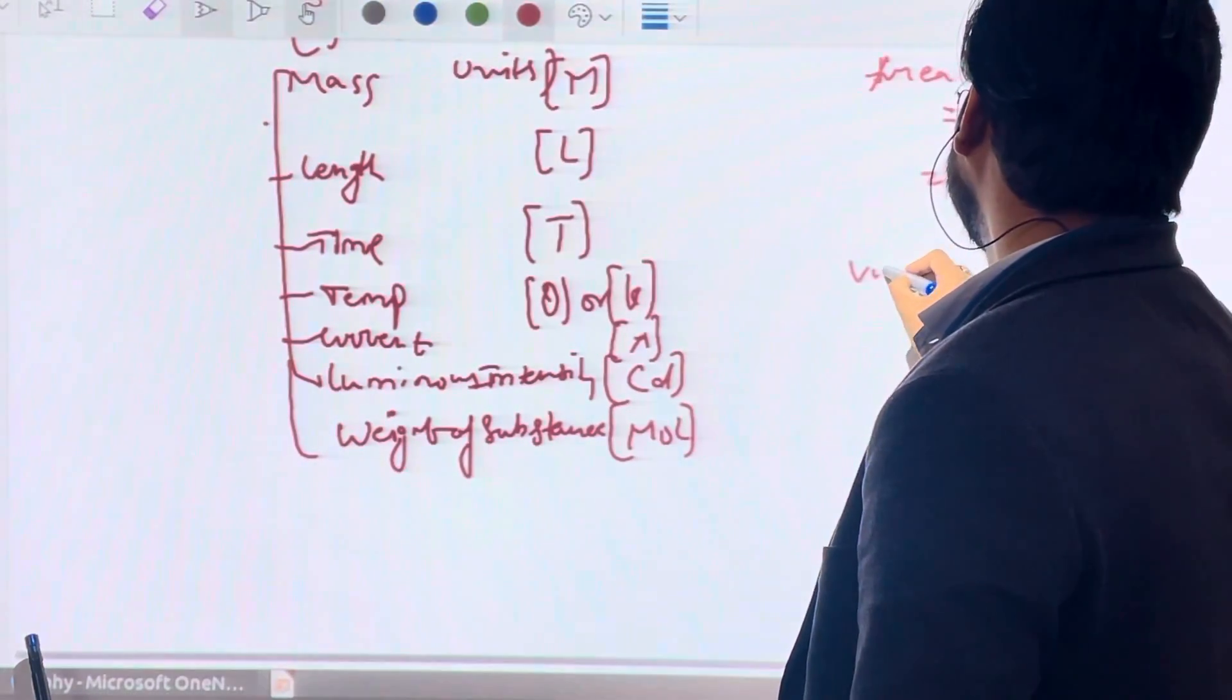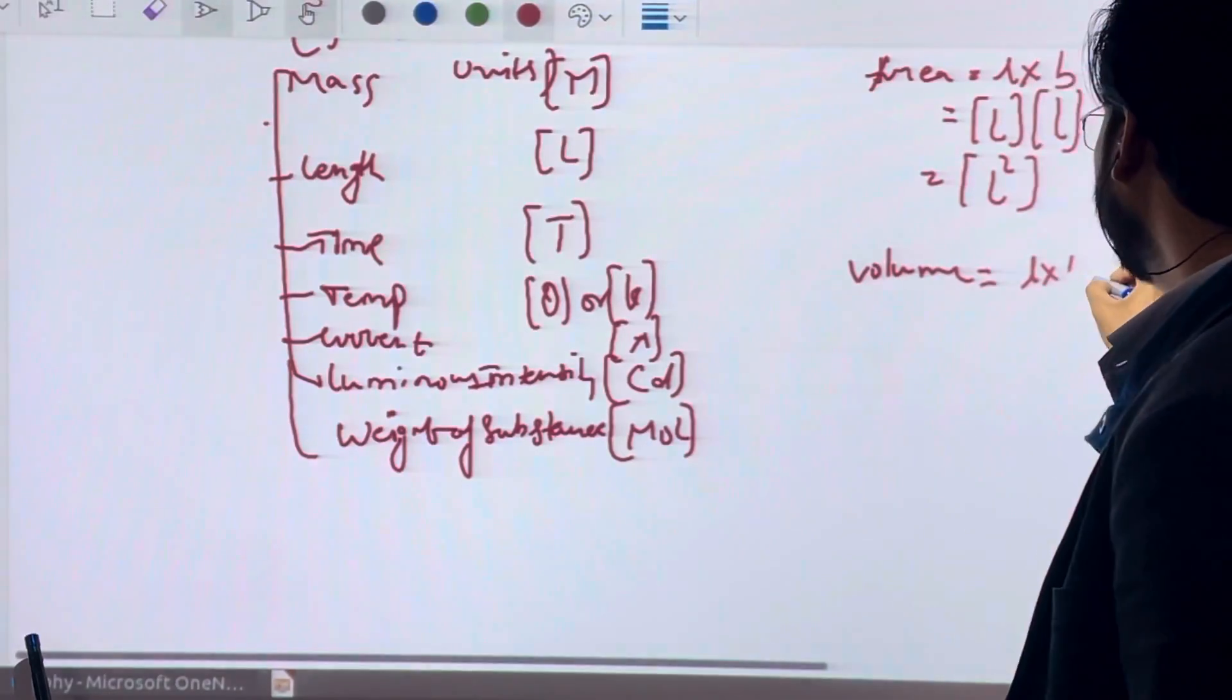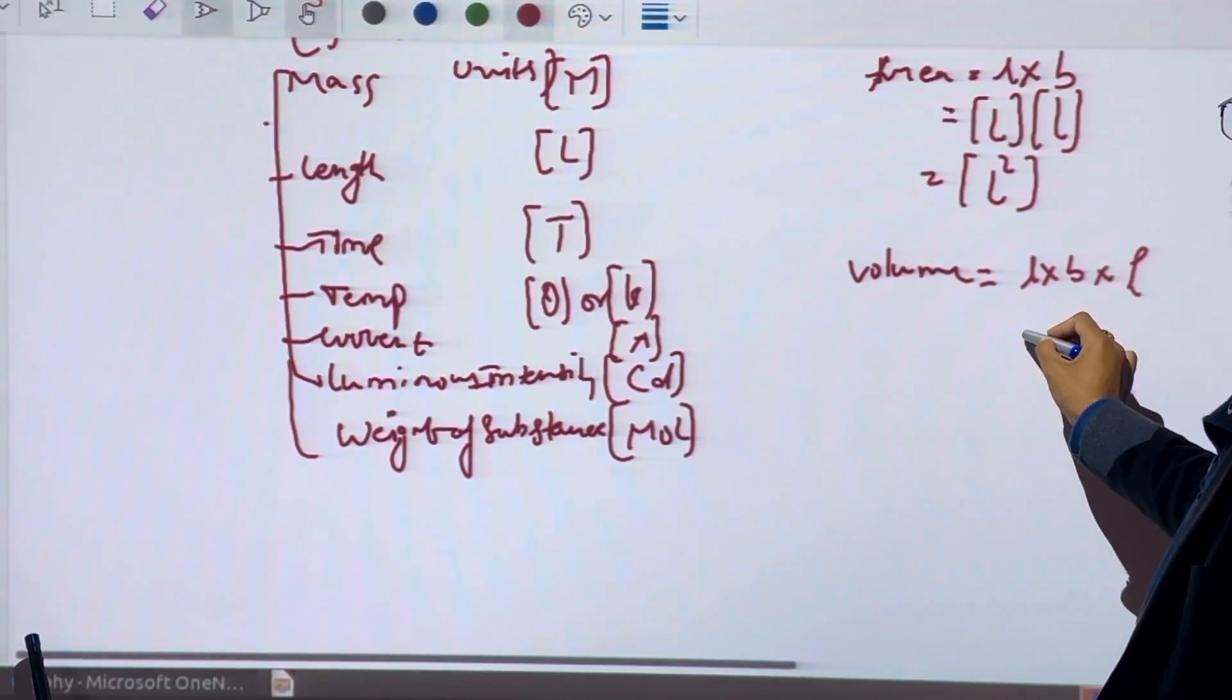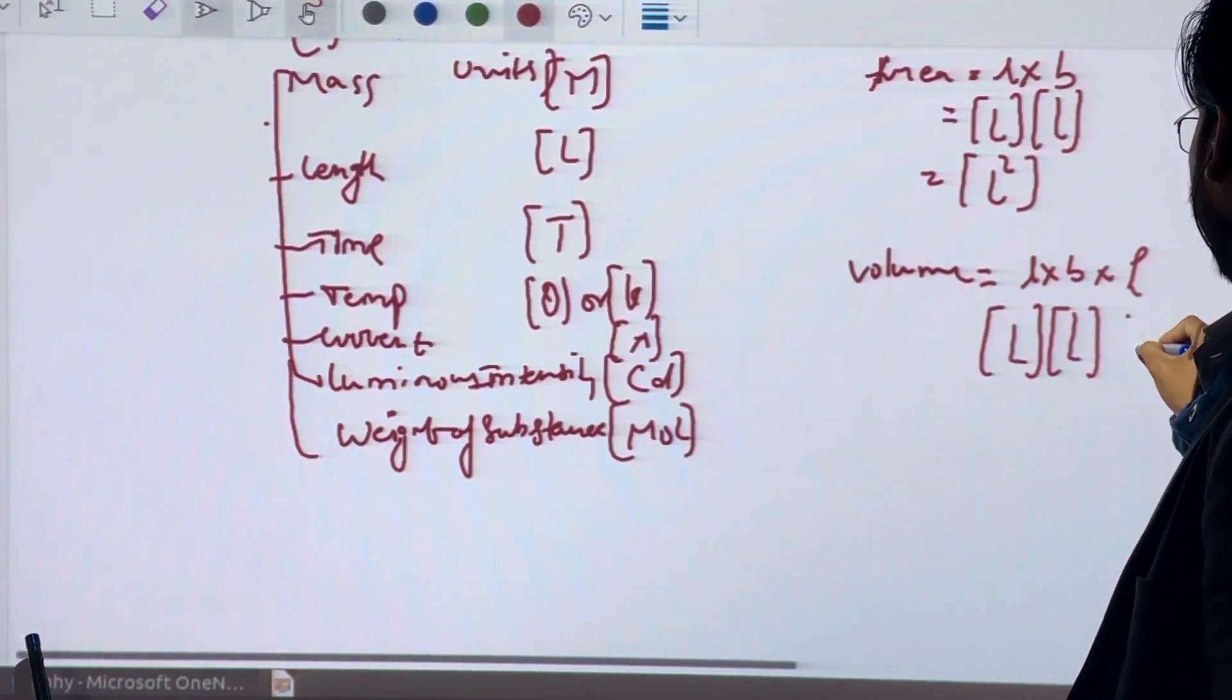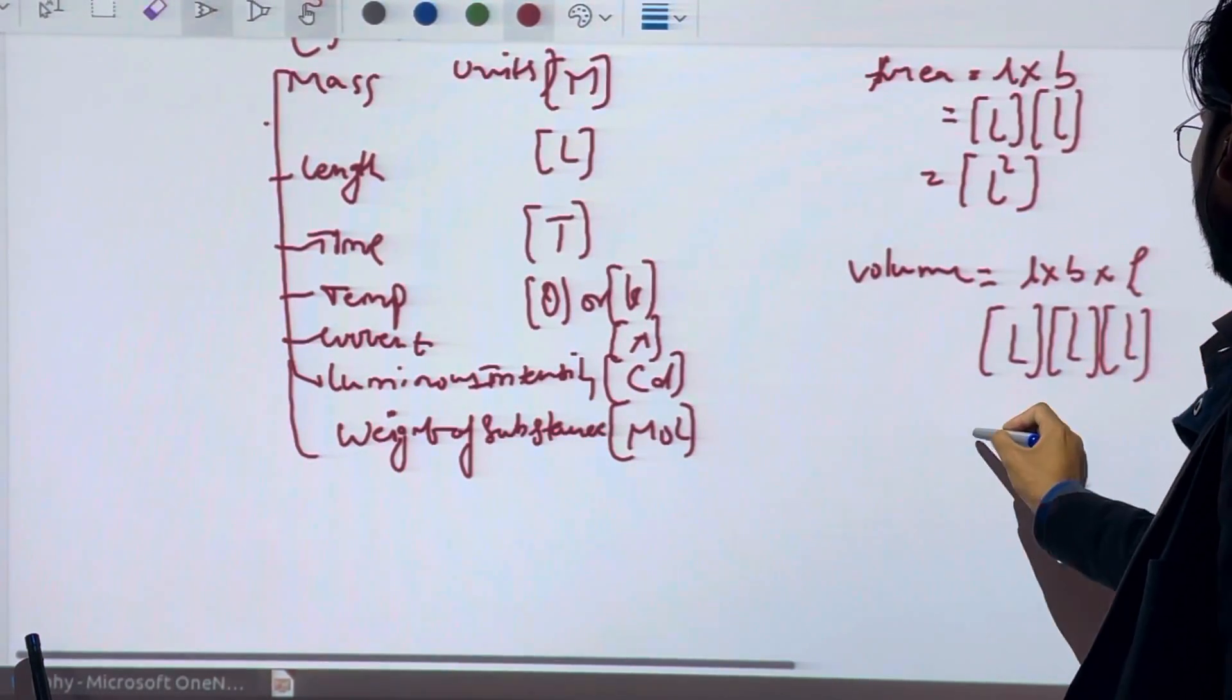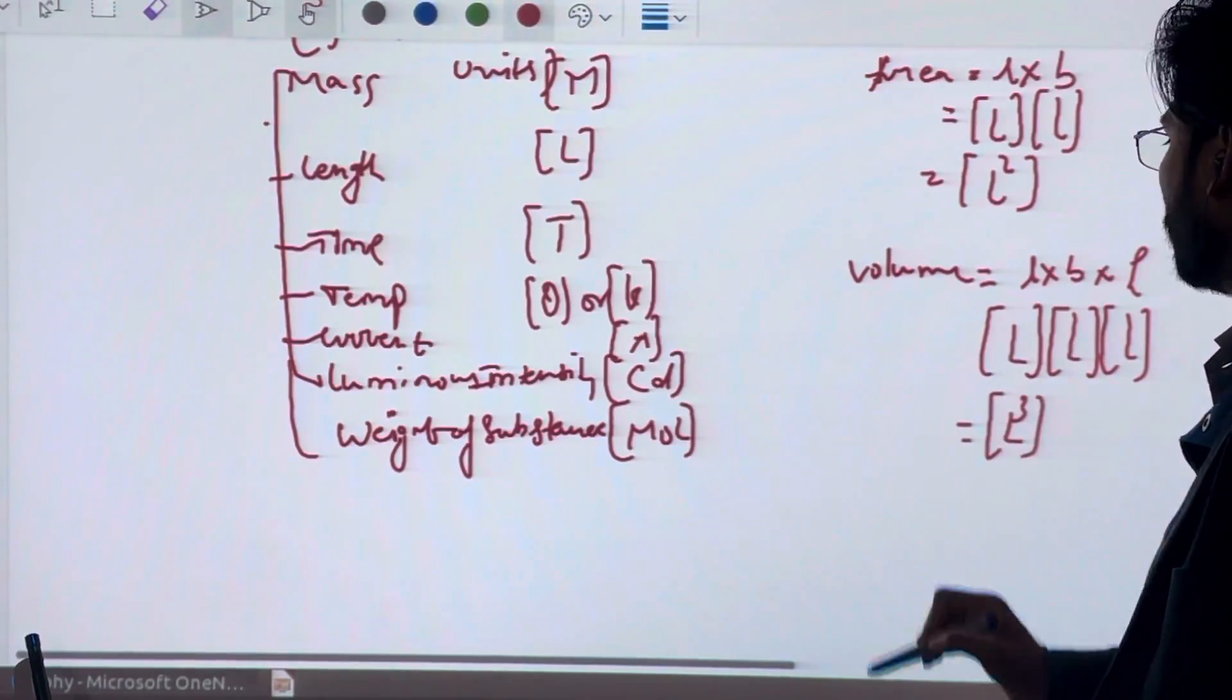Similarly, volume. We know that volume is length into breadth into height. Length is L, breadth is L, and height is L, so L cubed is the dimension of volume.